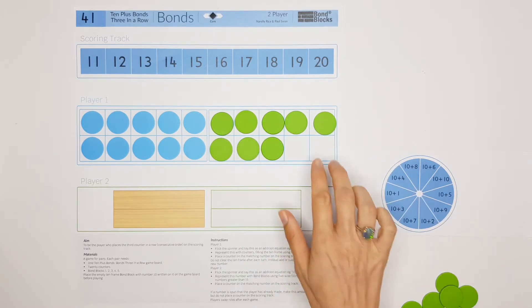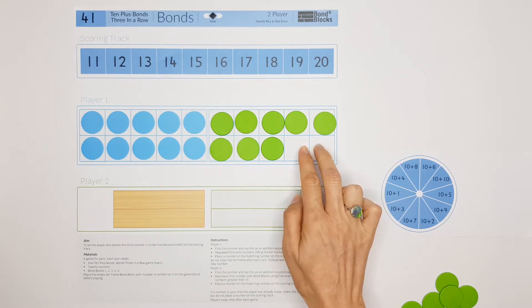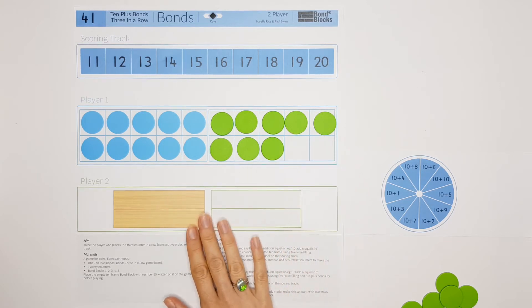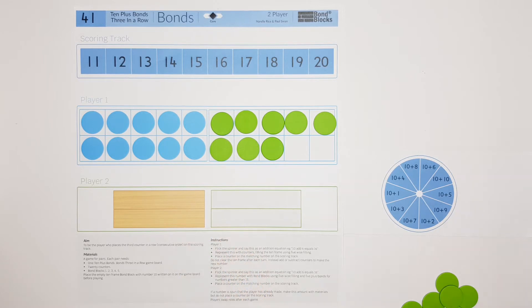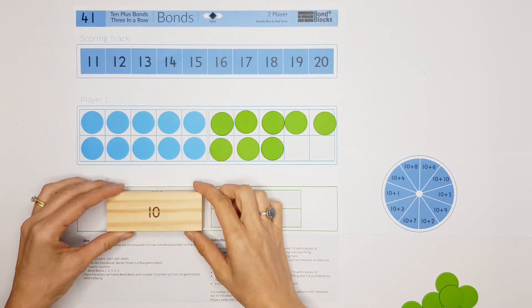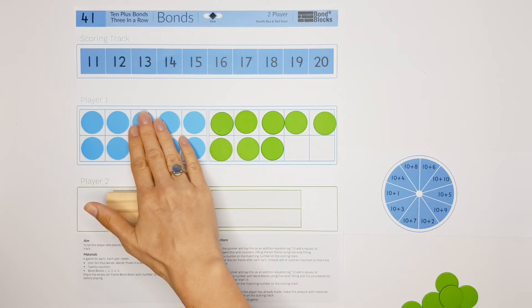I can repeat this representation using bond blocks on an empty 10-frame. We place the empty 10-frame block with the number 10 on here, and this matches these 10 counters.